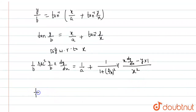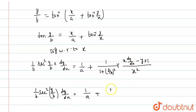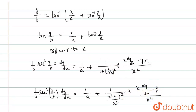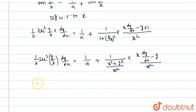Now, (1/b)·sec²(y/b)·dy/dx is equal to 1/a plus 1/(x² + y²)/x², into (x·dy/dx − y). We take x² common — x² and x² cancel out — giving us 1/(x² + y²) multiplied by (x·dy/dx − y).